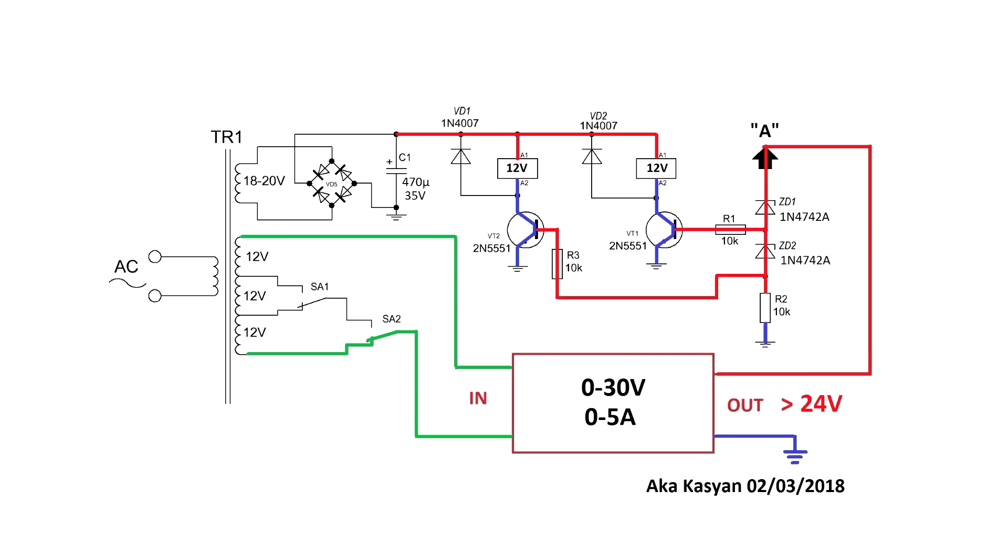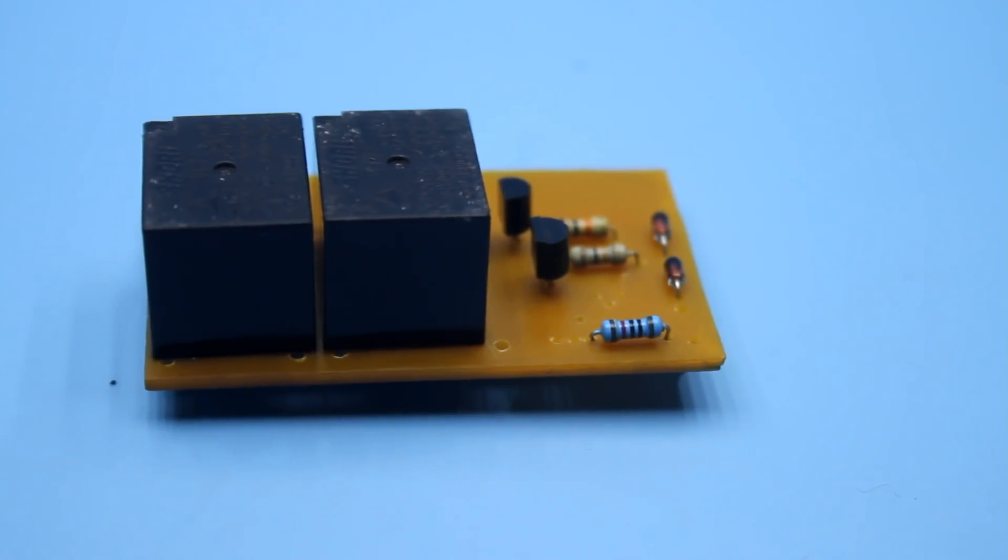Now the input of the stabilizer receives full voltage from all three windings connected in series. The first relay is on and power is supplied to its winding. But now this relay doesn't play any role, since the power is supplied through the second relay.